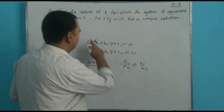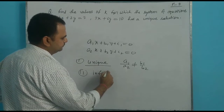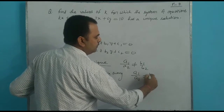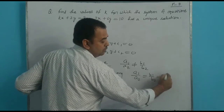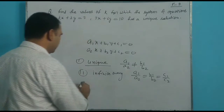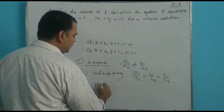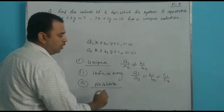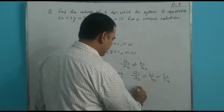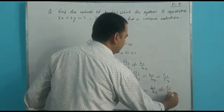For a unique solution, the condition is a1 upon a2 is not equal to b1 upon b2. For no solution (inconsistent case), the condition is a1 upon a2 equals b1 upon b2, which is not equal to c1 upon c2.